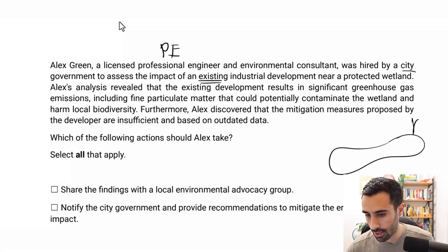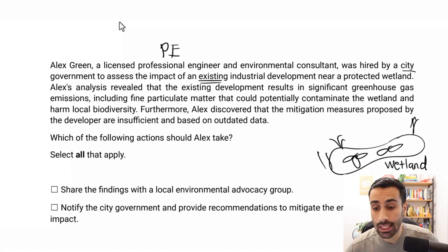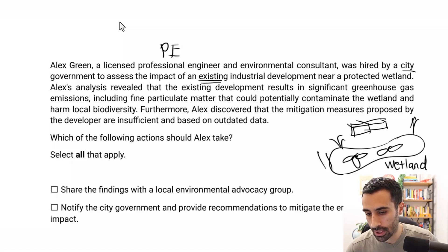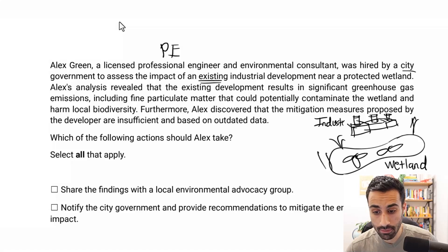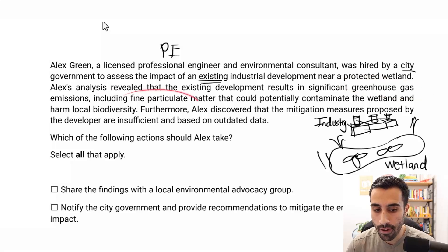Let's visualize this. We have a protected wetland with plants, and next to it is an industrial development — a few buildings with pipes — labeled as the industry. So we have the industry next to the wetland. Alex's analysis revealed that the existing development results in significant greenhouse gas emissions, including fine particulate matter, that could potentially contaminate the wetland and harm local biodiversity.